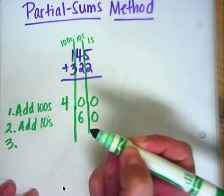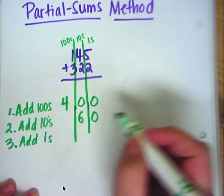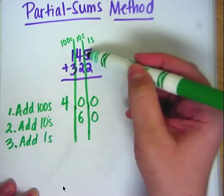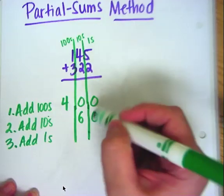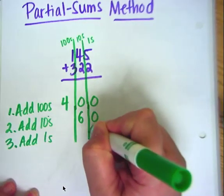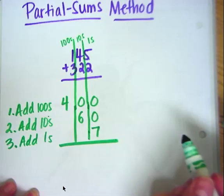Then for the third step, we're going to add the ones place. Right now we're looking at the ones. We have a 5 and a 2, so we only have to look at those numbers. 5 plus 2 is 7. We're going to put a line under there to separate it.